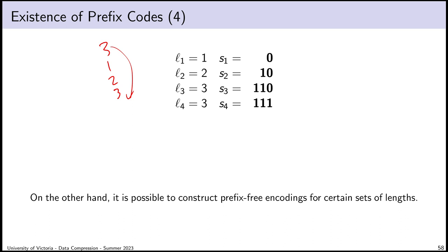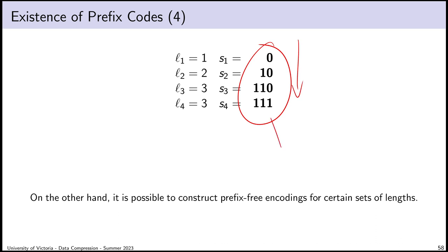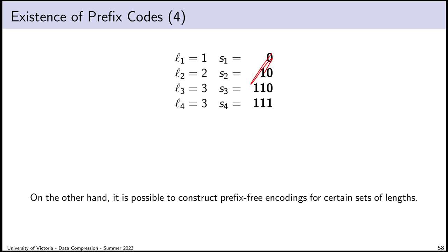I want to make the intuitive claim that there are more bit sequences beginning with zero than there are beginning with one-zero. If we consider all possible bit sequences that exist, the ones beginning with zero are a larger set than those beginning with one-zero. This is the intuition behind a necessary condition for prefix-free codes — the Kraft inequality — which we're building toward.